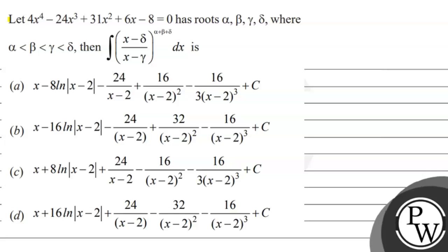Hello watcher, let's see the question. The question is that 4 times x raised to power 4 minus 24 times x cubed plus 31 times x squared plus 6x minus 8 is equal to 0, and has roots alpha, beta, gamma, delta where alpha is less than beta, beta is less than gamma, gamma is less than delta. Then find the integration of (x minus delta) divided by (x minus gamma) raised to power (alpha plus beta plus delta) dx.